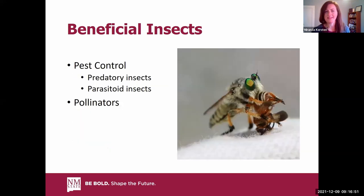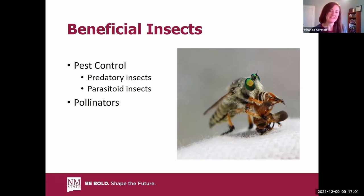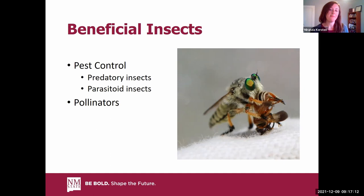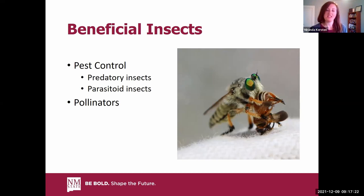For the purposes of today, we're going to consider beneficial insects as those that provide pest control — predatory insects and parasitoid insects. Other terms you may hear are natural enemies, which is just an organism that feeds on another organism, or biocontrol agents. We will also talk about pollinators since they are important for food production and many of our native flowers rely on them.